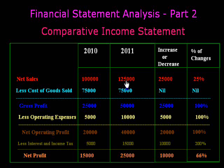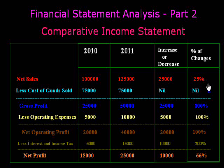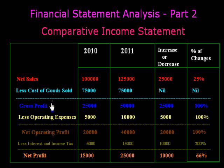Our sales team did their best and our sale increased up to one lakh twenty-five thousand. Due to this, within one year our sale increased by twenty-five thousand, and the change in percentage form is twenty-five percent — that is twenty-five thousand divided by one lakh, multiplied by one hundred, which equals twenty-five percent.